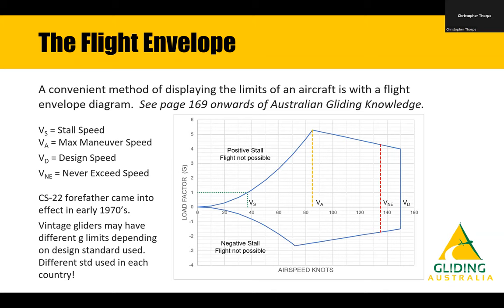CS22 — whose forefather was JAR22 — came into effect in the early 1970s. Vintage gliders will have different g-limits depending on the country of origin. Going from zero g, we have a positive stall line. You won't be able to fly at high g at low speed because the aircraft will stall out before you can get there. This stall line curves up to the point where you reach 5.3g, then tapers down to a design speed of positive 4g.